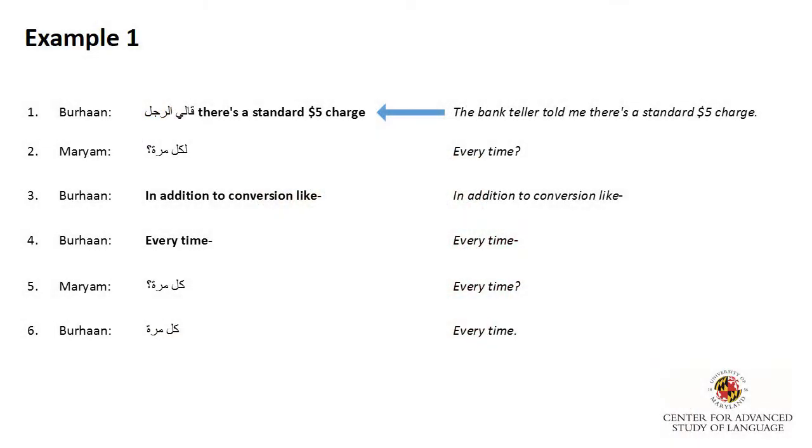Additionally, in line one, Burhan uses English to set off the bank teller's statement, there's a standard five dollar charge, as a quote. Research on multilingual groups has not found switching while quoting someone to reliably reproduce the original language, but it probably does so in this example.